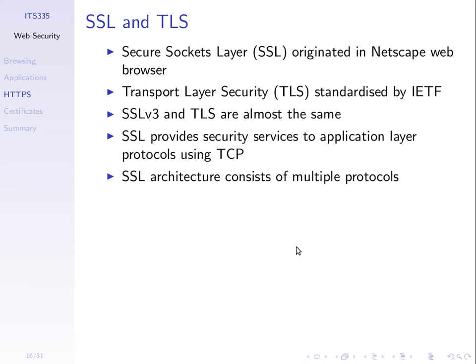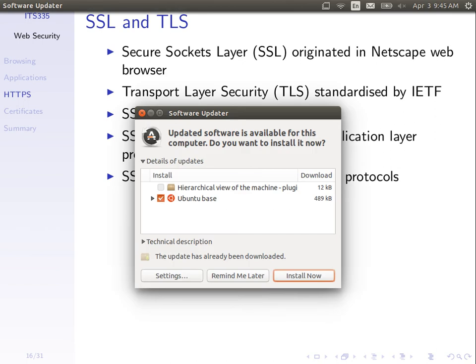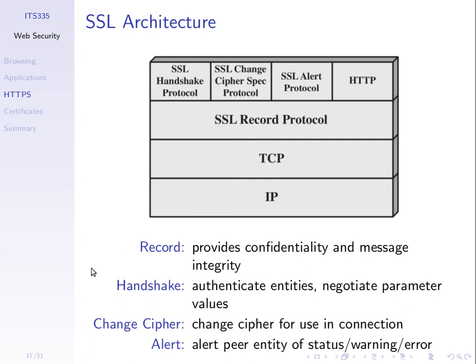SSL is quite complex and supports many cryptographic operations — encryption, key exchange, and message integrity. The SSL record protocol is the part that does the encryption and decryption of data. SSL doesn't specify which algorithm you must use — you can choose AES, RC4, and others. It also handles message integrity so when you receive a message, you can check whether it's been modified. To encrypt and decrypt, we need keys, so the client and server must exchange keys up front.